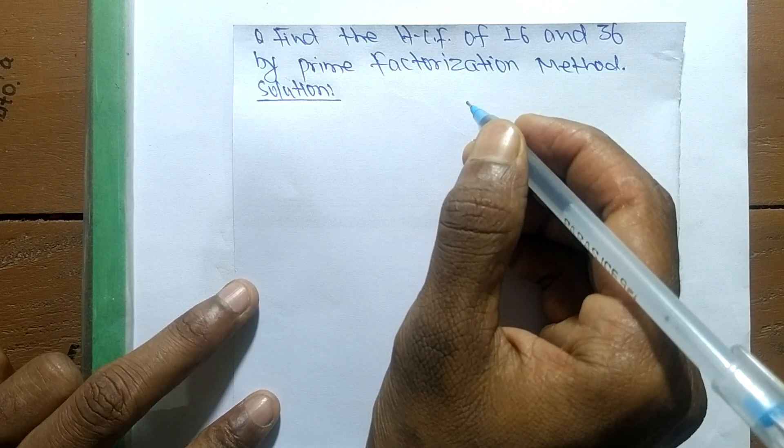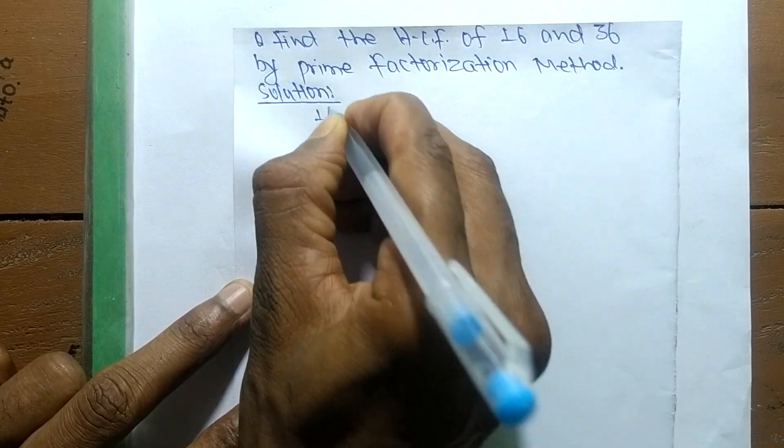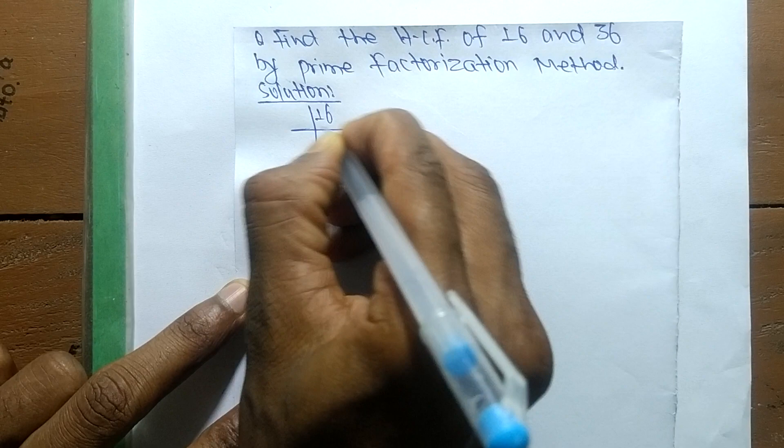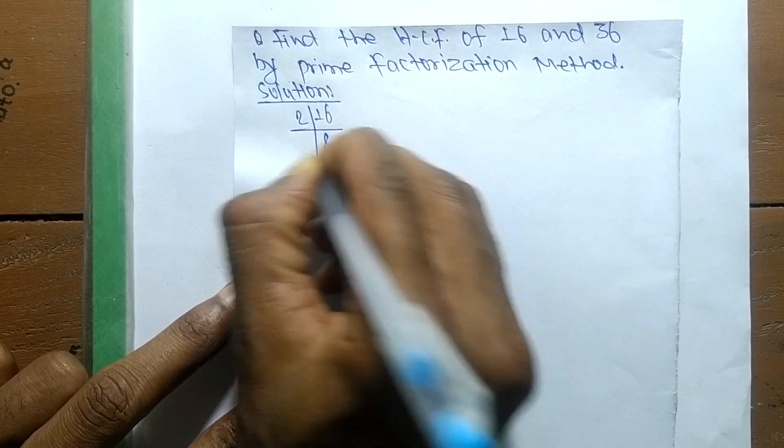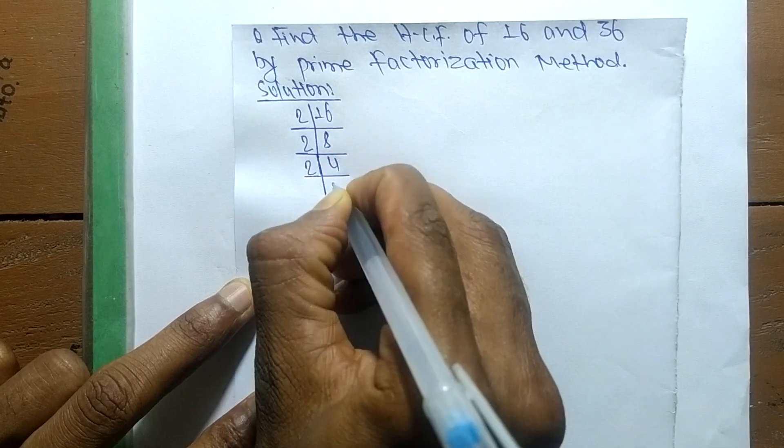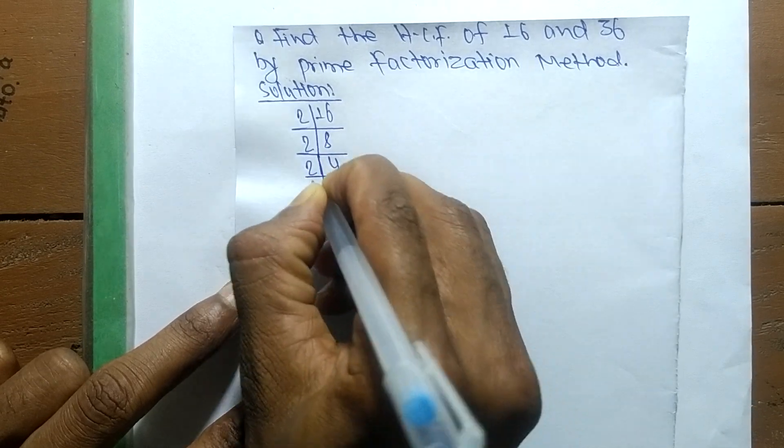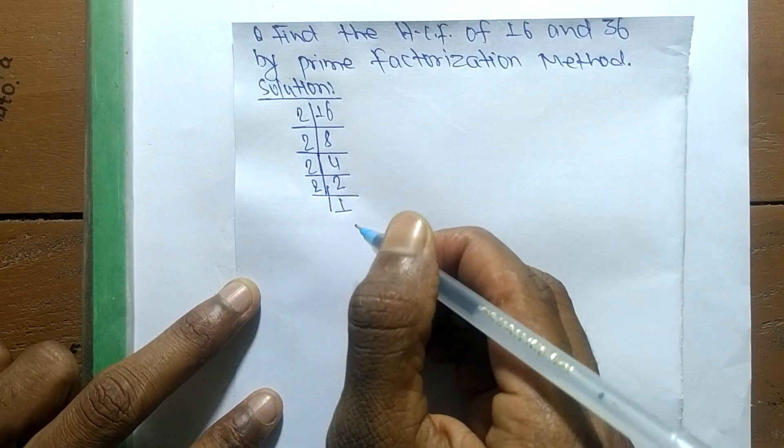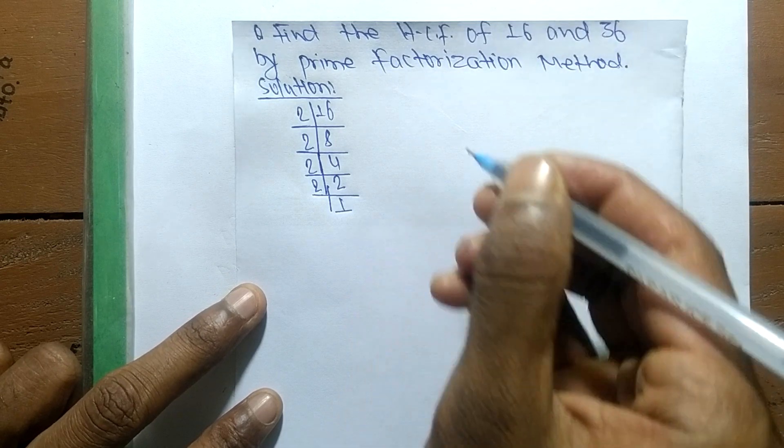First, we find out the prime factors of 16. So it is 2 times 8 means 16, 2 times 4 means 8, 2 times 2 means 4, and 2 times 1 means 2. Like this, the prime factors...